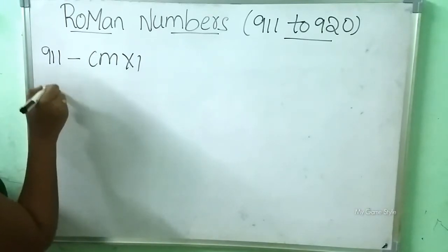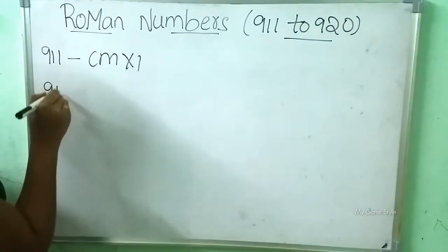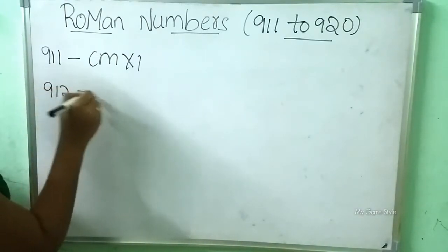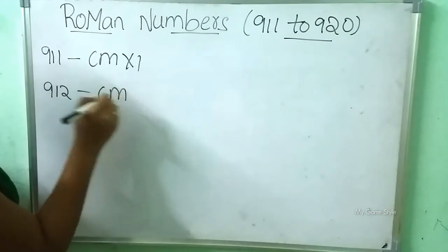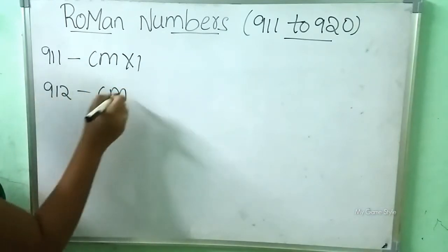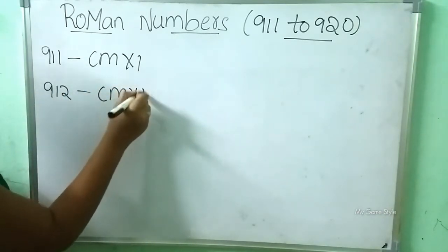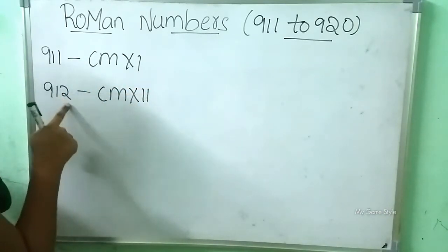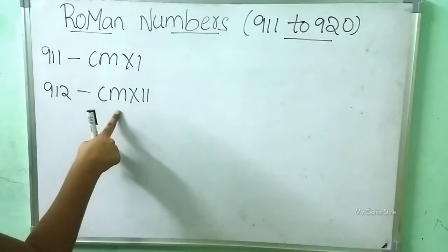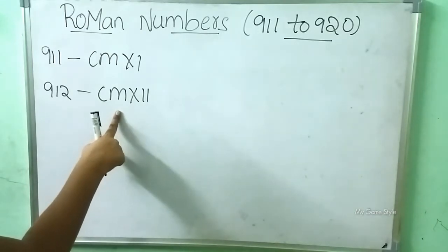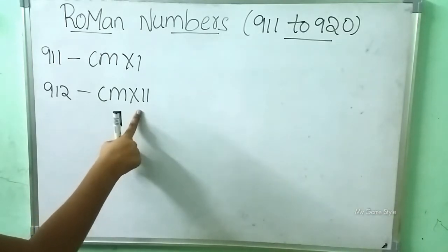After 911, 912. Now how to write? CM is 900. XII is 12. So this means 912, written as CMXII.